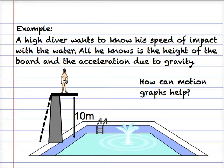All he knows is the height of the board, but he also knows that the acceleration of gravity is about 9.8 meters per second squared. So how can motion graphs help him to know the speed of impact with the water?